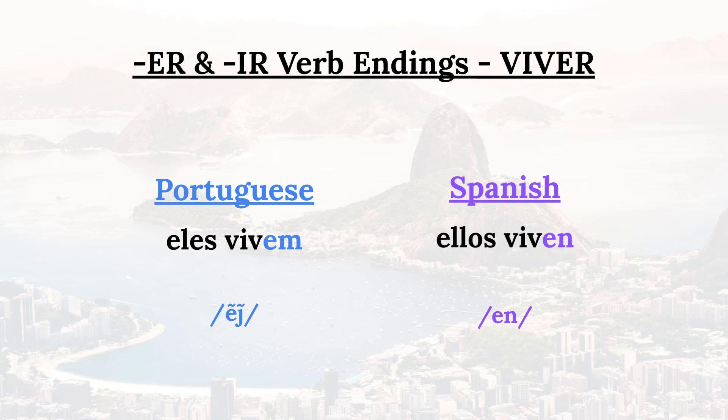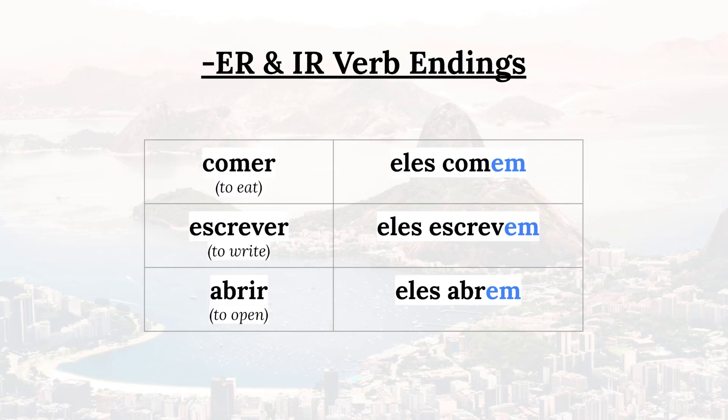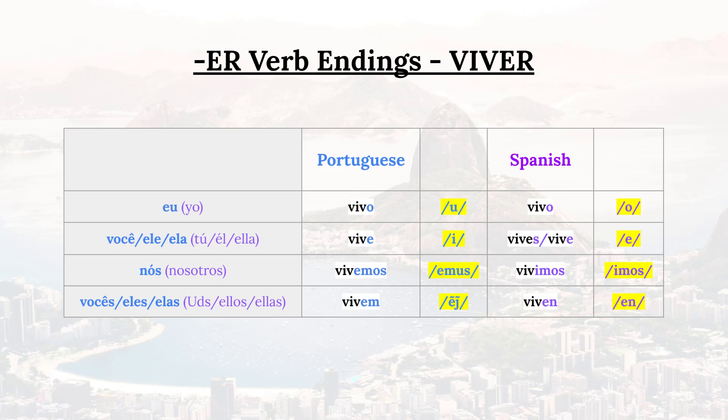In the third person plural, 'they live' is 'eles vivem' — the EM is pronounced with a nasal 'ẽ' sound. I know it's tempting to say 'vivem' where your lips touch at the end, but it's 'vivem' — lips never touch at the end. So 'they eat' is 'eles comem,' 'they write' is 'eles escrevem,' 'they open' is 'eles abrem.'